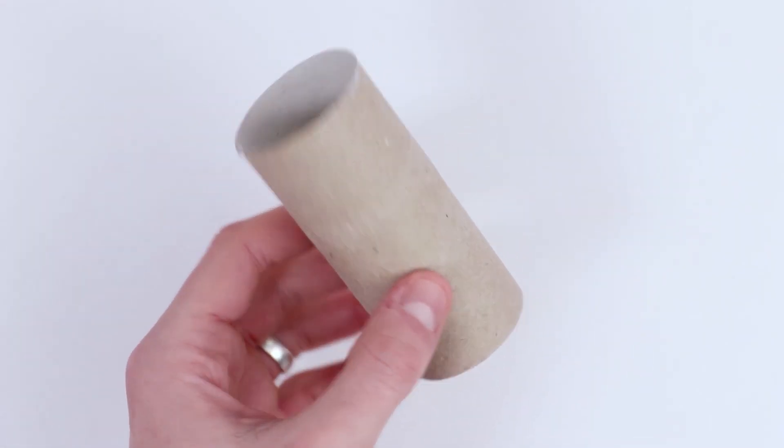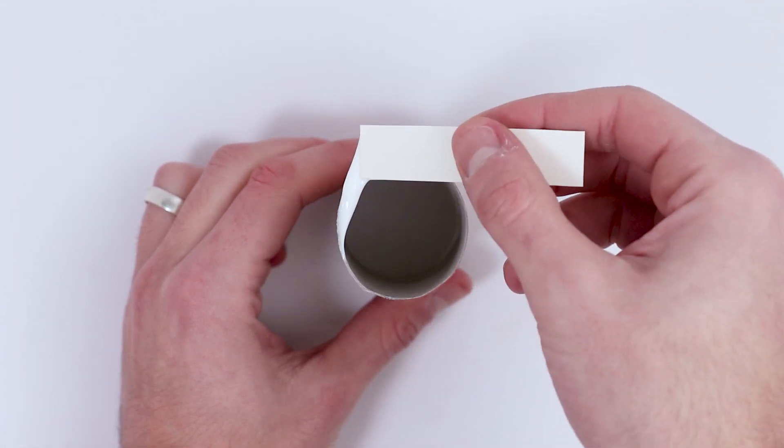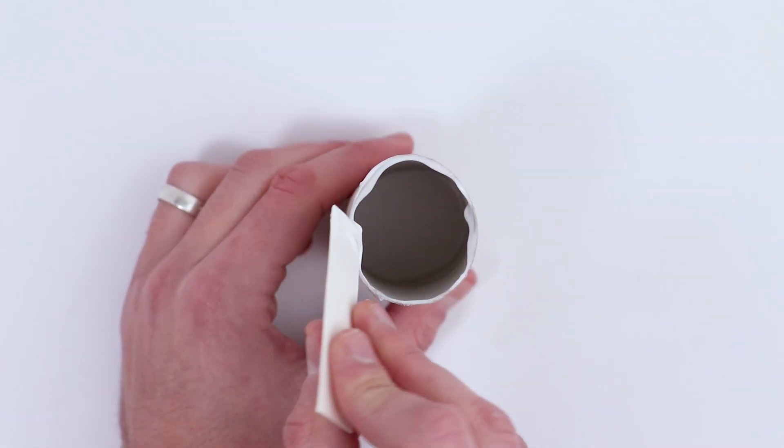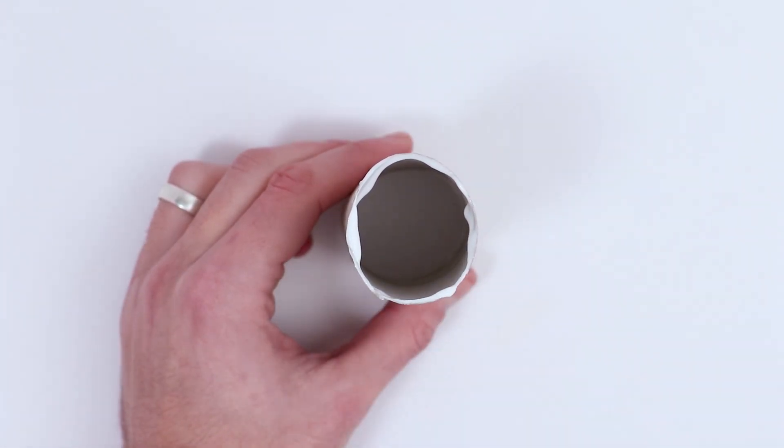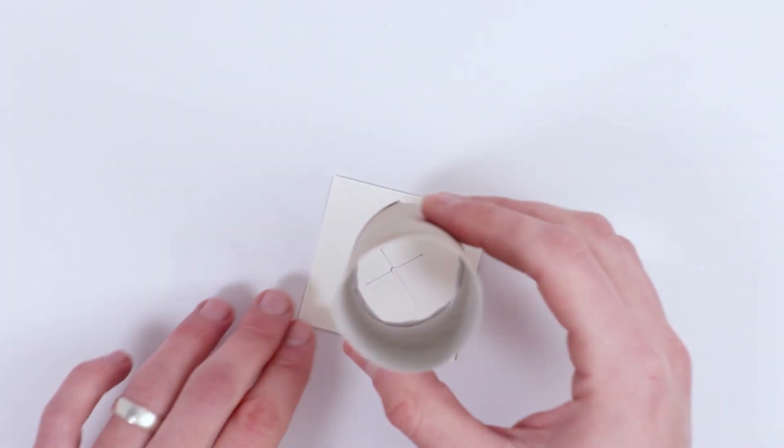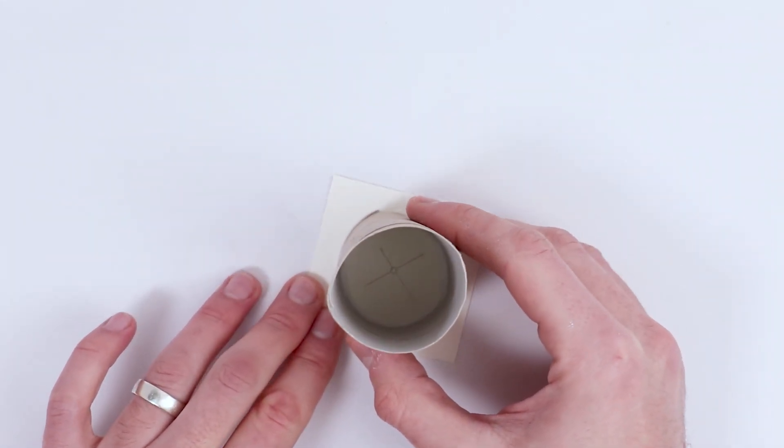Next, take your toilet roll and glue around the rim of one end of the roll all the way around. Stick this end of the toilet roll onto the base we've just made, trying your hardest to make sure that hole we made is in the middle.